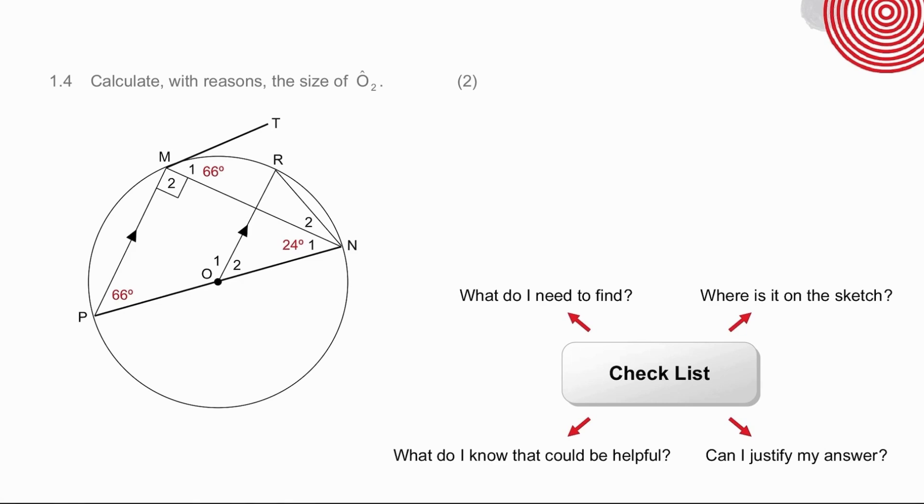Question 1.4, we need to find the size of angle O2. So if we go to the sketch and remind ourselves of where that angle is, we could usually jump to the conclusion correctly that we would use the angle at the center theorem. But in this particular case, doing that doesn't really provide us with much assistance because RN does not subtend any other angles on the circle or at the center, obviously.